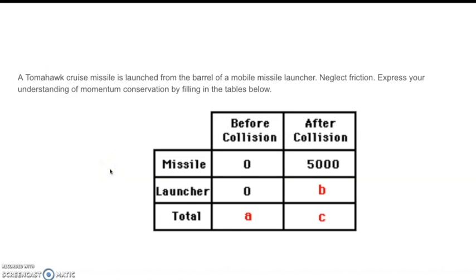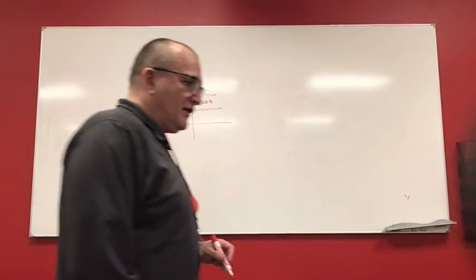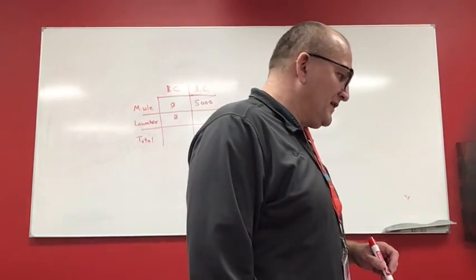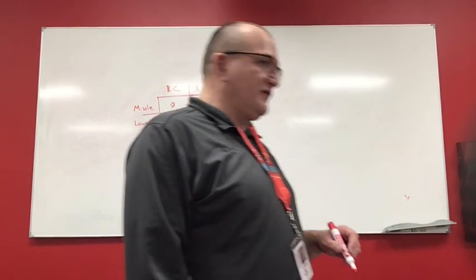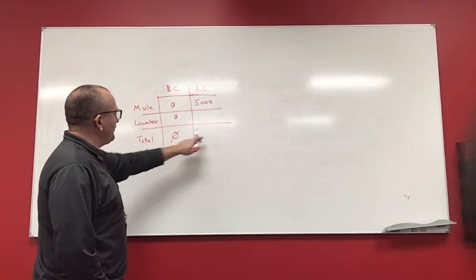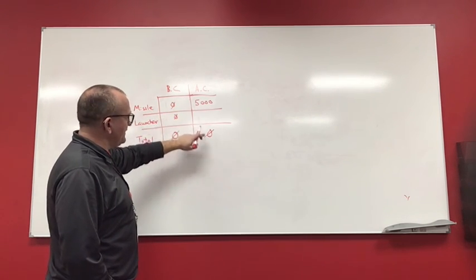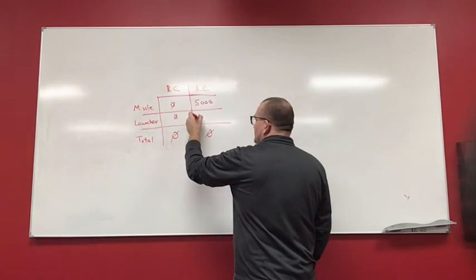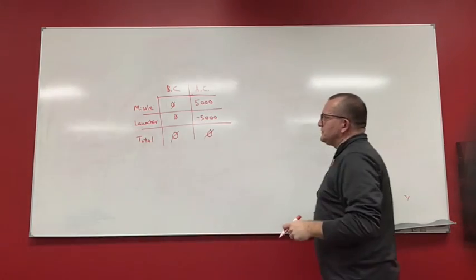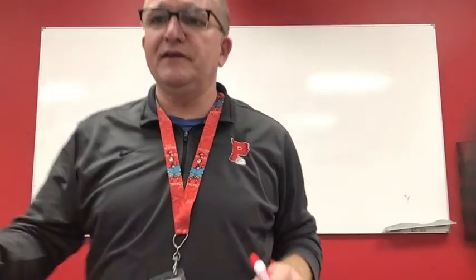A Tomahawk cruise missile is launching from the barrel of a mobile missile launcher. Neglect friction. Express your understanding of momentum conservation by filling in the tables below. Do it now. Okay. So we got a Tomahawk cruise missile launch from the barrel of a mobile missile launcher. No friction. And we want to express conservation of momentum. So right away we know missile plus launcher equals total. My total here, we put my total after the collision. So that'll be zero. So 5,000 plus this will have to equal zero. Well, 5,000 plus negative 5,000 equals zero. So the missile shoots off here, pushes back on the launcher. And that's the momentum that pushes back on the launcher. Momentum is conserved.